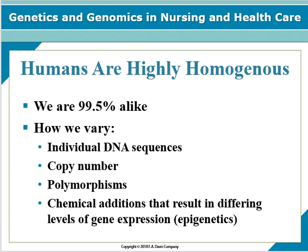Humans are highly homogenous. We are 99.5% alike, and that 0.5% difference is important — it has health-related and social-cultural consequences. People vary in their individual DNA sequences by their copy numbers, polymorphisms, and the presence or absence of chemical additions that result in differing levels of gene expression, or epigenetics as it's referred to.